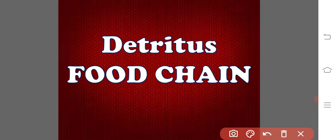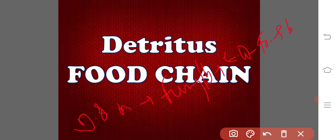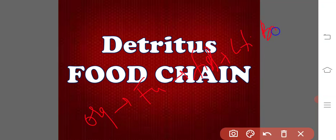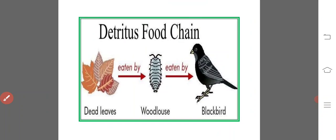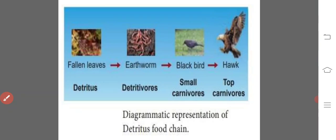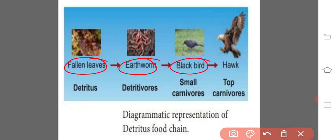The best examples of the detritus food chain are: dead organic matter (plant or animal) → fungi or bacteria → earthworm → frog → small bird; or dead organic material → fungi or bacteria → small fish → large fish → birds. Here, the chain starts with dead leaves eaten by woodlice, which are eaten by blackbird; or fallen leaves eaten by earthworm, earthworm eaten by blackbird, blackbird hunted by hawk. So it moves: detritus → detrivores → small carnivores → top carnivores.